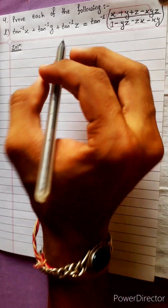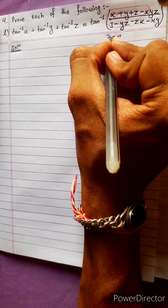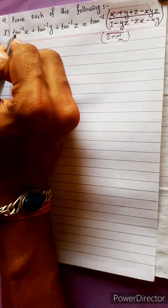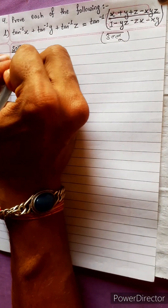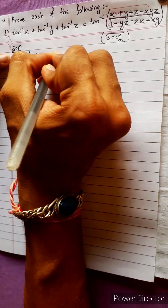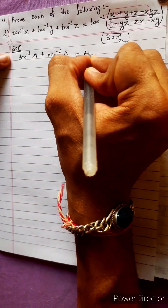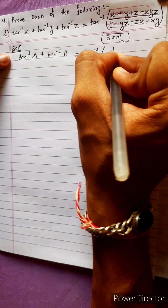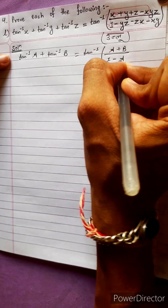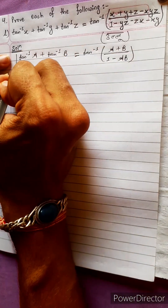Through each of the following, this question will be 1. The formula is tan inverse a plus tan inverse b equals tan inverse of a plus b divided by 1 minus ab. This is the formula we will use.